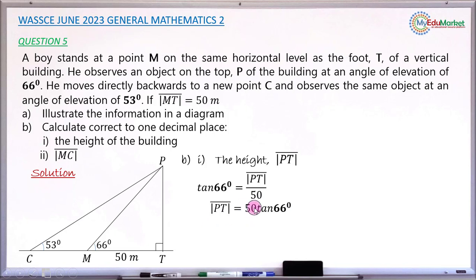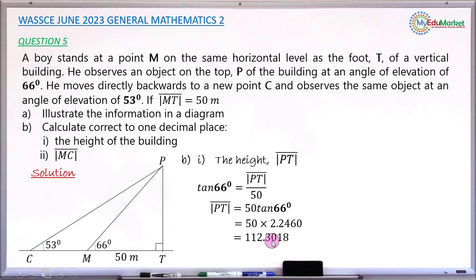Cross-multiplying, we get PT equals 50 multiplied by tan(66°). Checking tan(66°) from a calculator or four-figure table gives 2.2460. Multiplying 2.2460 by 50 gives 112.3018. Rounded to one decimal place, the height of the building PT is 112.3 meters. This answers Roman numeral (i).